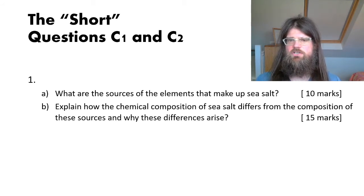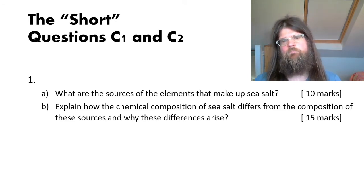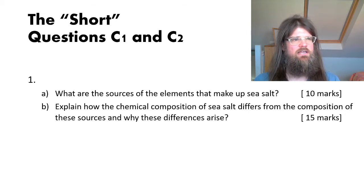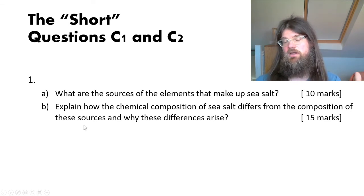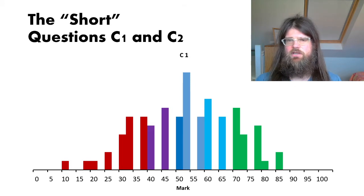The first question has two parts: what are the sources of the elements that make up sea salt, and a second part worth slightly more marks — explain how the chemical composition of sea salt is different to the composition of the sources. This is really asking about the processes responsible for transporting elements into the ocean, and also why there might be elemental fractionation during those processes. The overall mark distribution is very similar to the distribution for the part of the exam as a whole.